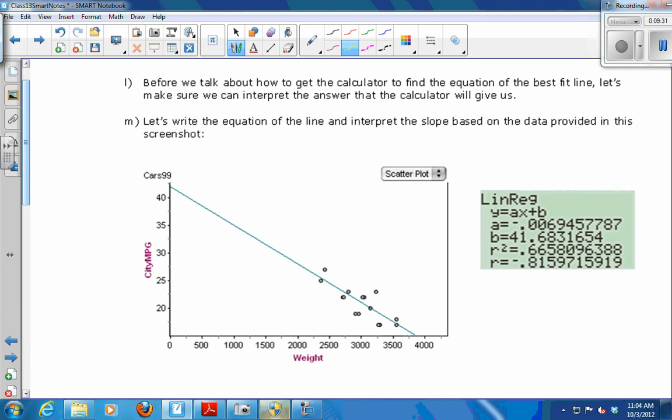So the process of how to find out which line is the best, because you could draw a ton of different lines that seem to match the data pretty well. Your calculator has a method for doing it that's been proven to be the best way. So I'm not going to show you how to do it by hand. We'll just have the calculator do it. But before I show you how to get the calculator to do it, I want to make sure you can interpret what the calculator will give us.